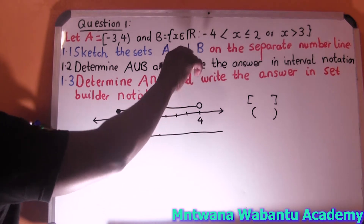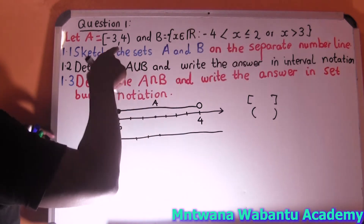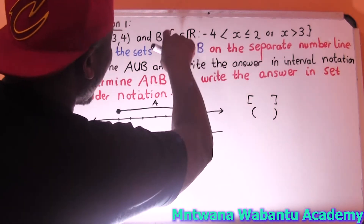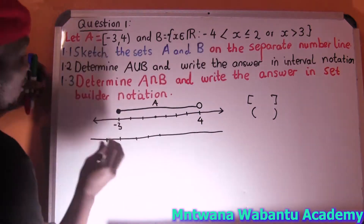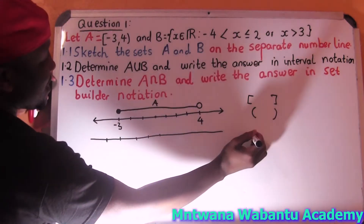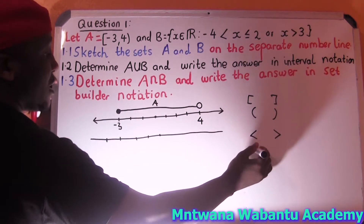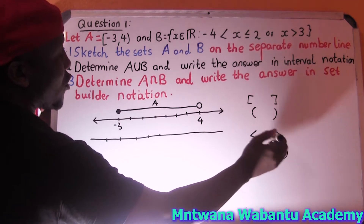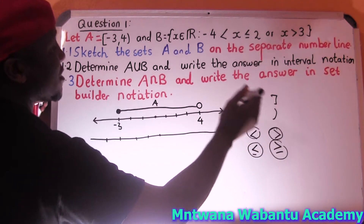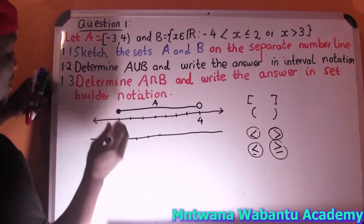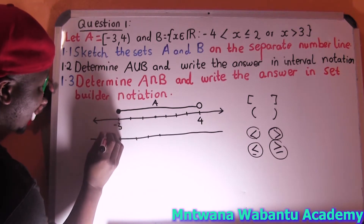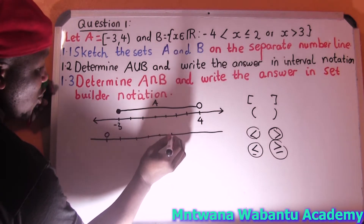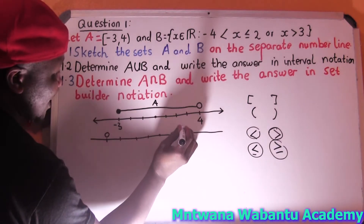This is set builder notation versus interval notation. In interval notation you represent the interval. For Set B, start from negative 4 — excluding. When you see a round bracket it means excluding; a square bracket means including. Less than or equal means including, greater than or equal means including; strict less than or greater than means excluding. So negative 4 is excluding — open dot — and we go all the way to 2 including — closed dot.